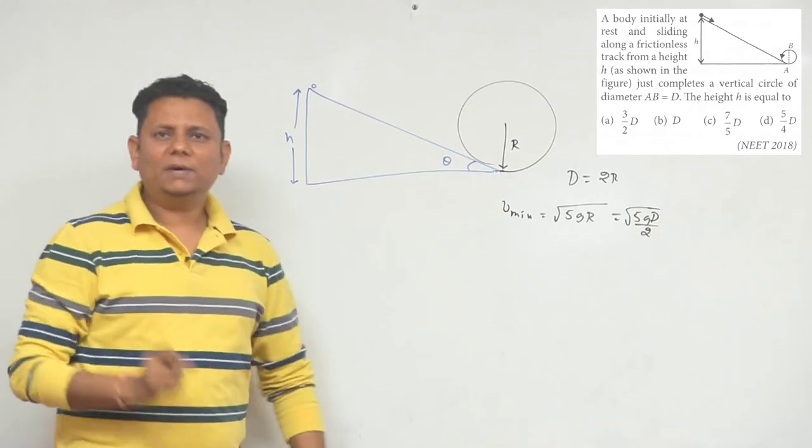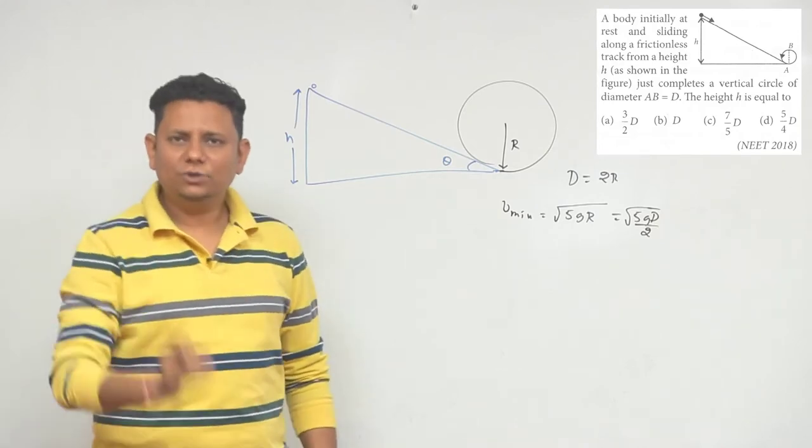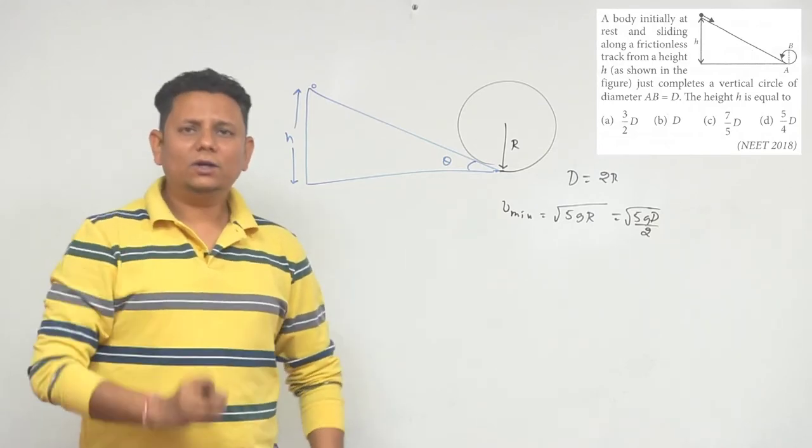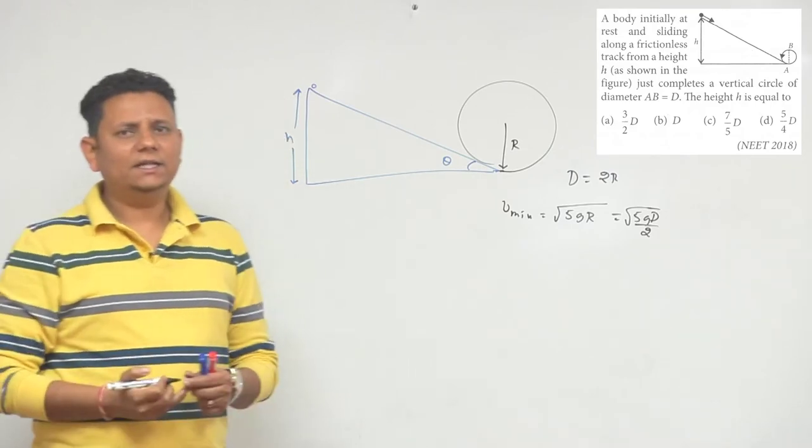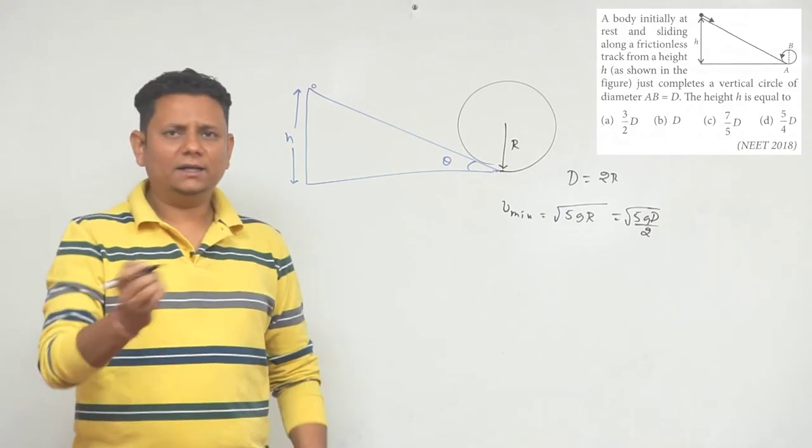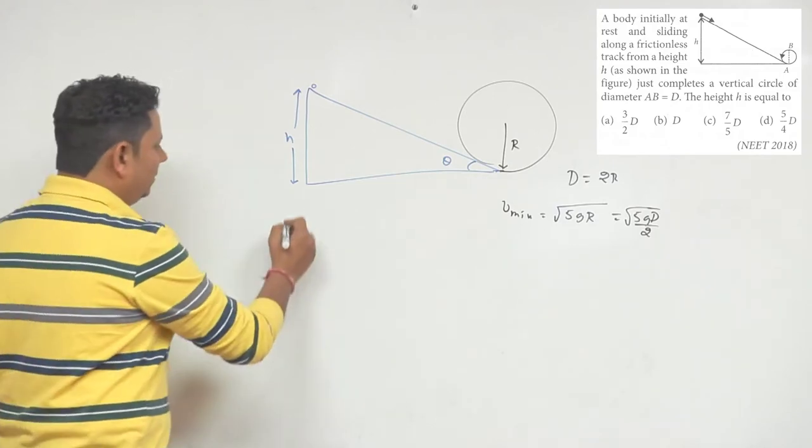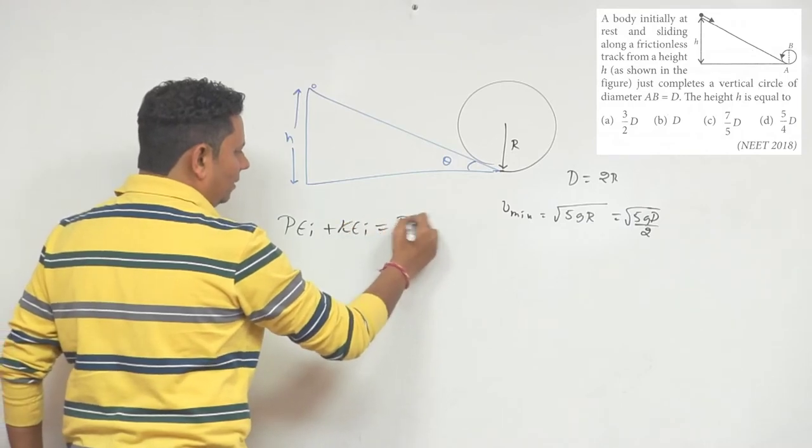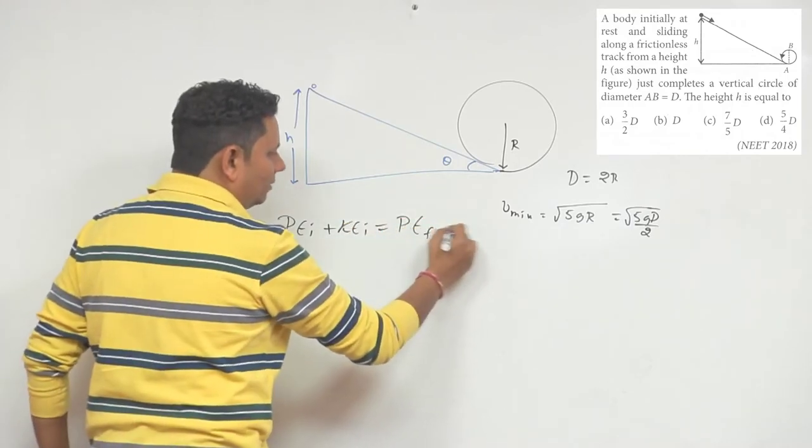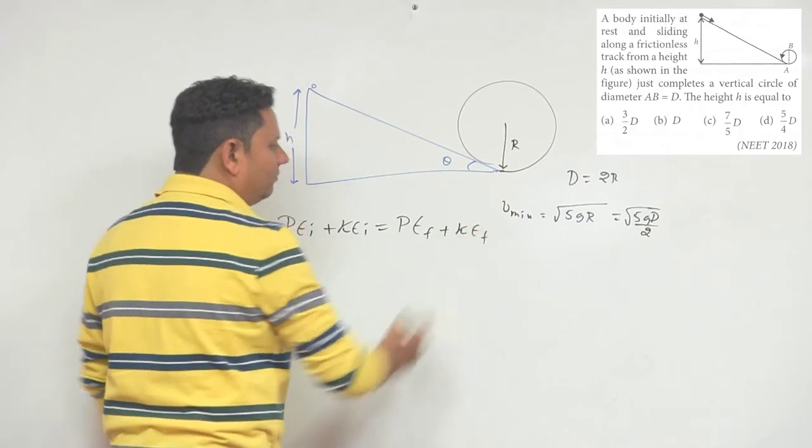If we see here, work done by external force is 0, work done by pseudo force is 0, work done by non-conservative force is 0 because the surface is frictionless. So we can easily apply work-energy theorem, which means that potential energy initial plus kinetic energy initial will equal potential energy final plus kinetic energy final.